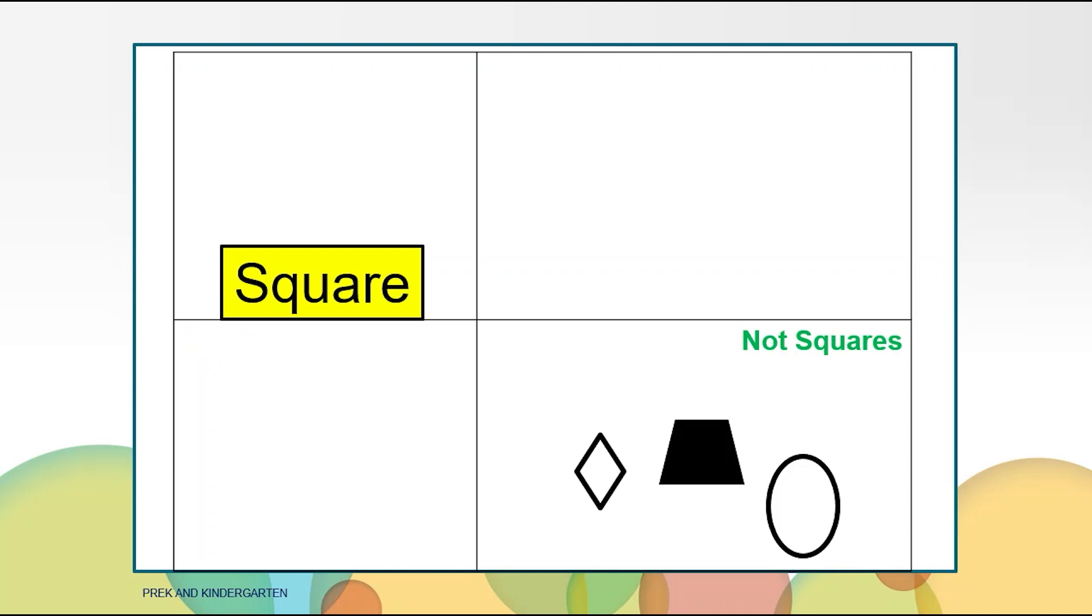These shapes are not squares. The first shape has four straight lines but it doesn't have four square corners. The corners are different sizes. The middle shape is not a square because it has four sides that are not equal. One is shorter and one is longer. The third shape is not a square because there are no straight sides and no corners.